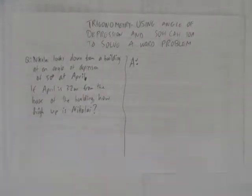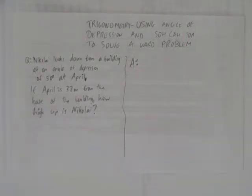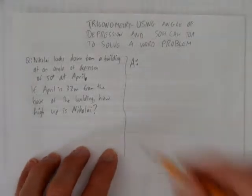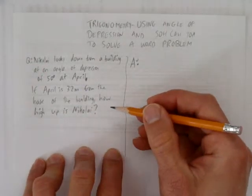So the question is, Nikolai looks down from a building at an angle of depression of 50 degrees at April. If April is 32 meters from the base of the building, how high up is Nikolai?